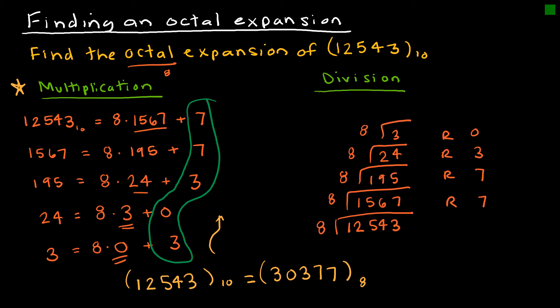So now I have to divide by 8 again. 8 goes into 3 0 times with a remainder of 3. I want you to notice this time, because I started at the bottom and worked my way up, my solution here is in the correct order.